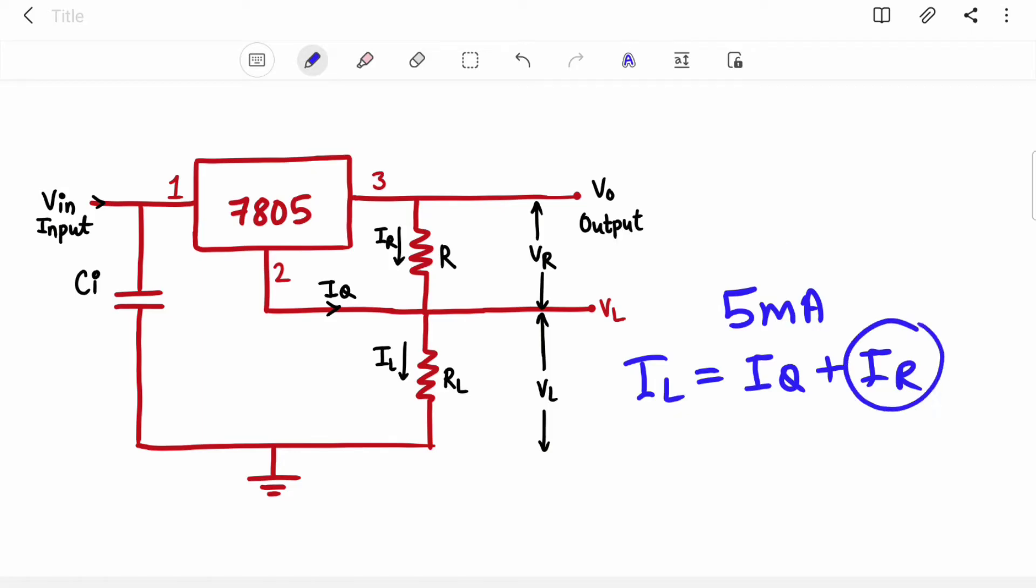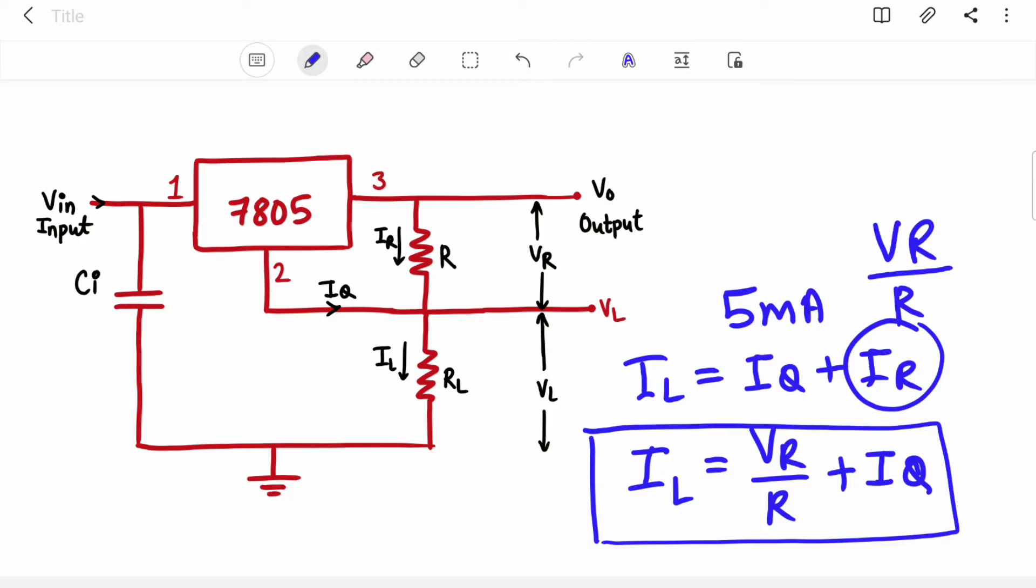Now what is IR? IR is just VR upon R because voltage across this resistor is VR. So you can write this equation: IL equal to VR upon R plus IQ. This is the equation of IL.